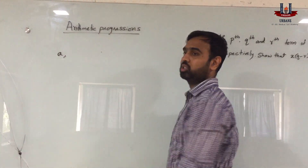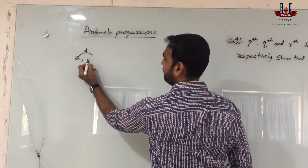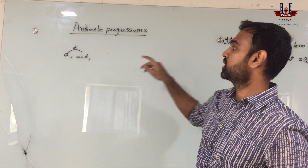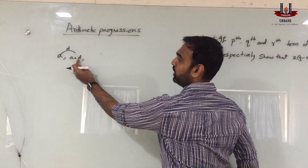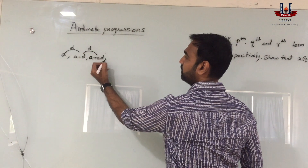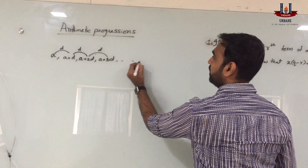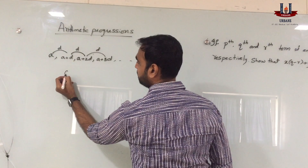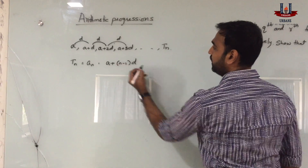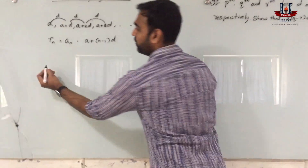In the sequence of an arithmetic progression, the first term and the second term differ by a value d, so the second term will be a plus d. The same difference is maintained across the sequence, so the third term will be a plus 2d, the fourth term will be a plus 3d, and so on. We get the nth term: the nth term an or tn is given by a plus (n minus 1) into d, where n is the position where the value is found.